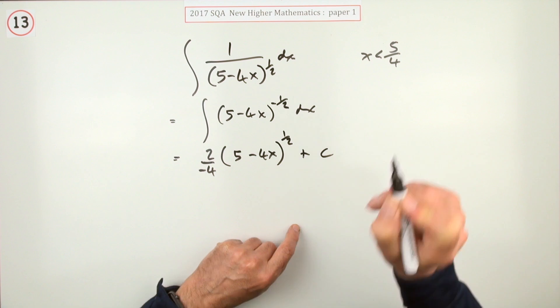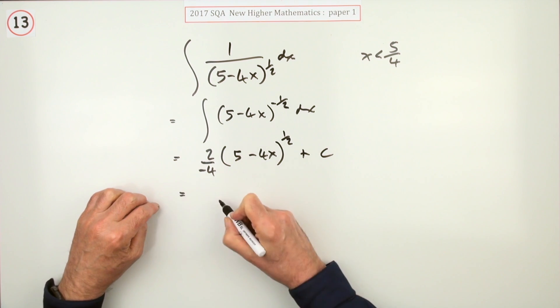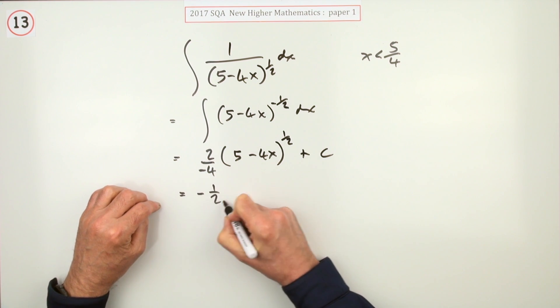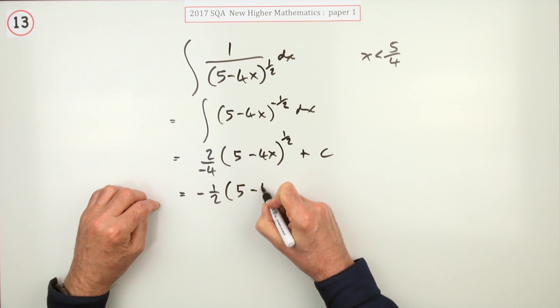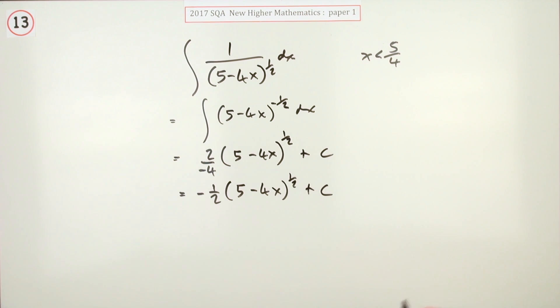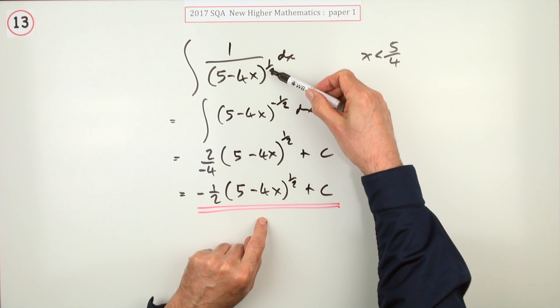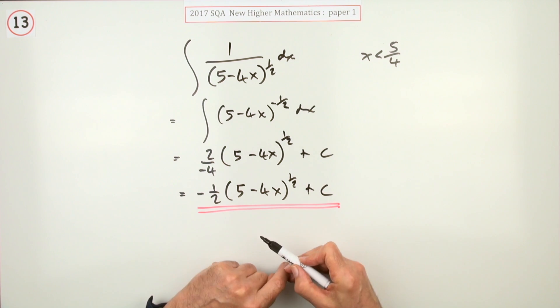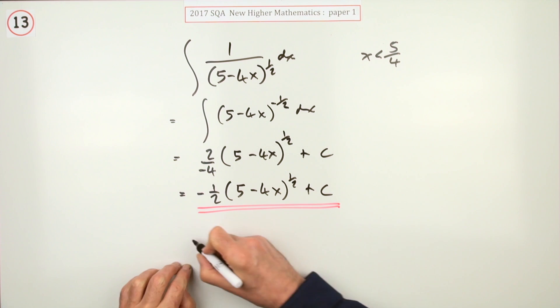We have actually there. So I would just cancel that down to a half, so negative a half of five minus four x to the power of half plus C. And I decided just to leave it as power of half because it started off with power of half rather than rewriting that as square root.